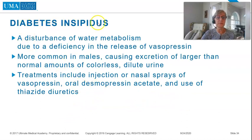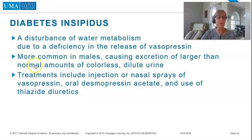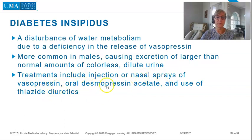Diabetes insipidus is a disturbance of water metabolism due to deficiency in the release of vasopressin. It is more common in males, causing excretion of larger than normal amounts of colorless, dilute urine. Treatments include injection or nasal spray of vasopressin, oral desmopressin acetate, and use of thiazide diuretics.